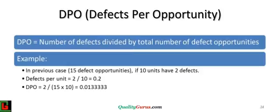In the previous slide, we calculated that with 5 parts and 3 possible defects in each part, the total defect opportunities are 15. Suppose during the inspection, you find that there are actually 2 defects in 10 units inspected. Then the DPO, or defects per opportunity, are 2 divided by 15 times 10, or 0.0133.